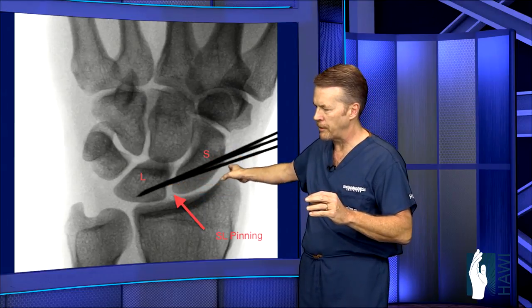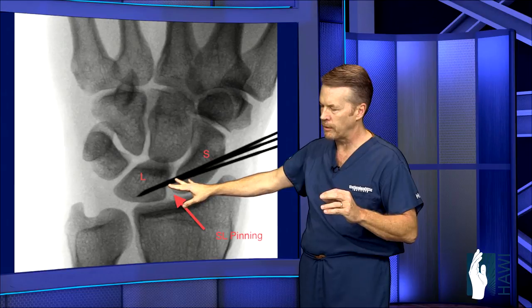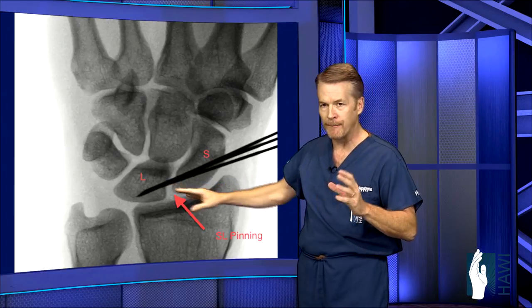These pins are cut off right underneath the skin, and this shows normal alignment of the scaphoid and the lunate.